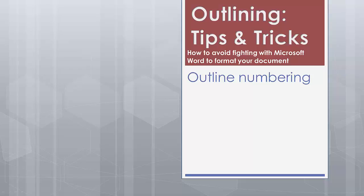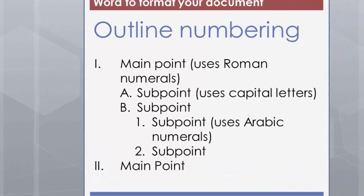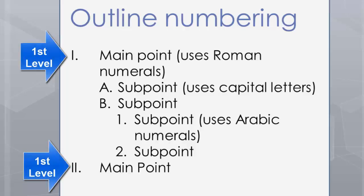When you create a formal outline, there is a particular numbering convention you use. The first level, your main points, are set off by Roman numerals followed by a period.